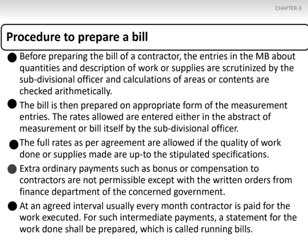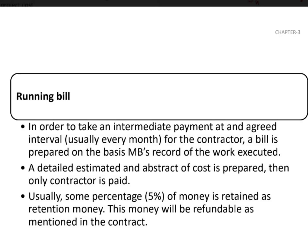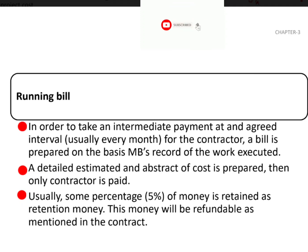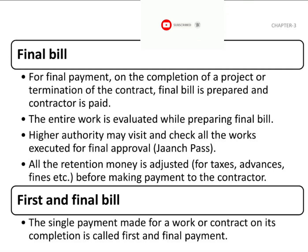Such an intermediate payment statement for work done is called a running bill. In order to take an intermediate payment, usually every month, a bill is prepared on the basis of measurements recorded for the work executed. The detail estimate and abstract of cost is prepared, and then the contractor is paid. Usually some percentage — about five percent — is withheld as retention money, which will be refundable as mentioned in the contract.